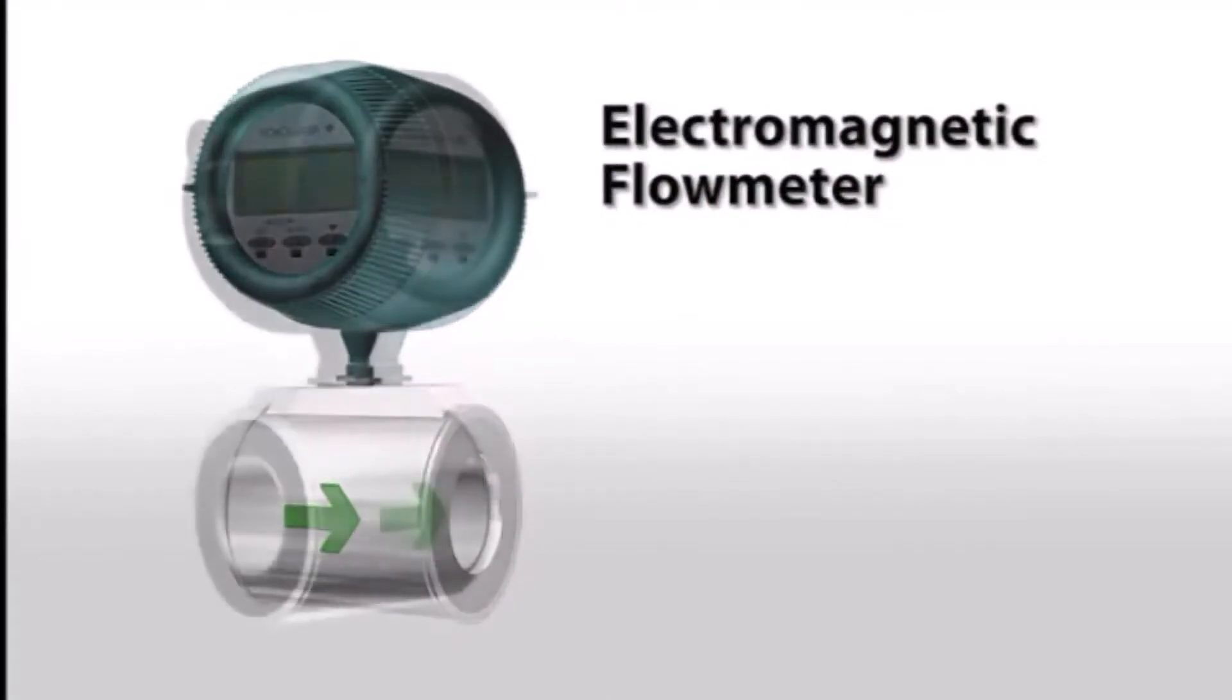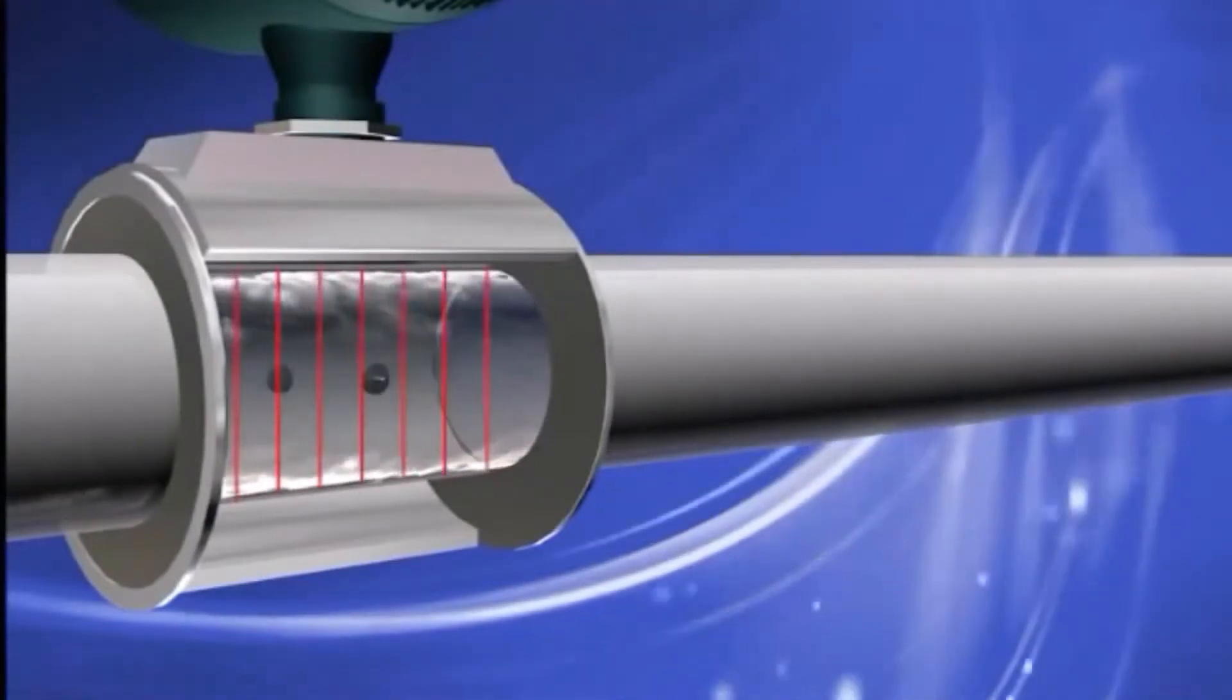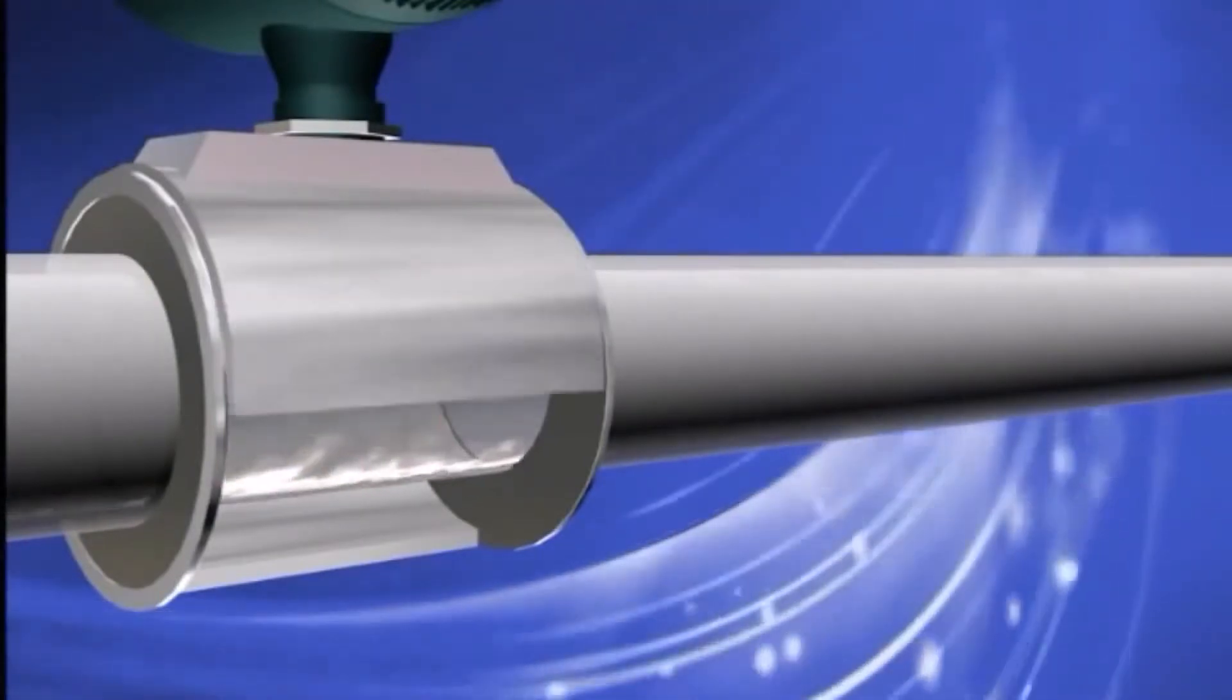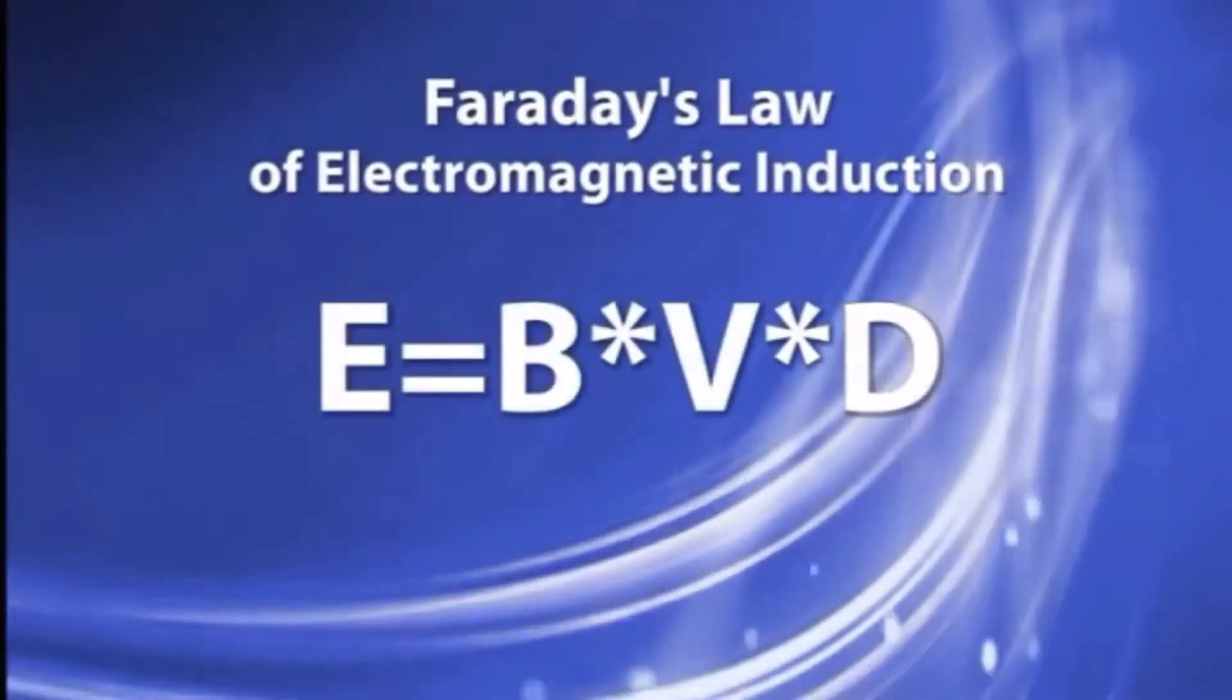The electromagnetic flow meter, commonly known as the magmeter, gets its name from the magnetic field generated within the flow tube that produces a signal proportional to flow. This principle employs Faraday's law of electromagnetic induction.